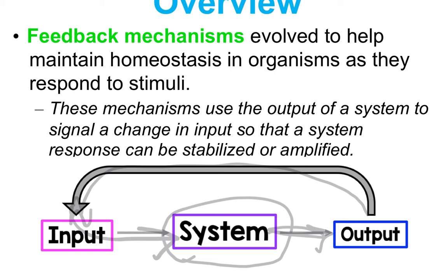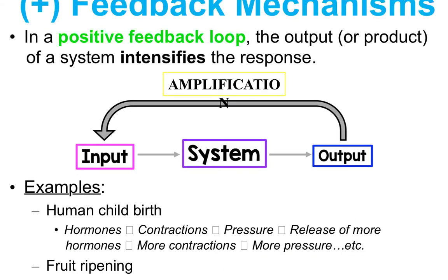In negative feedback, things tend to fix themselves. A great example of positive feedback is global warming. As climate change occurs, it creates change in the environment — usually the distribution of more greenhouse gases — which speeds up the warming process of the earth. That speeding up creates more climate change, so it's constantly feeding into itself. In positive feedback, the output of the system intensifies the response — there's an amplification.